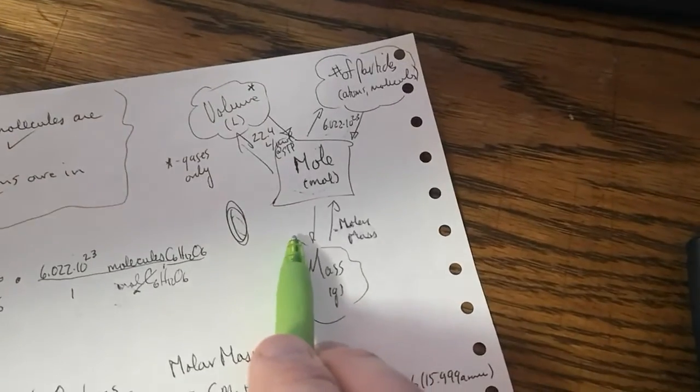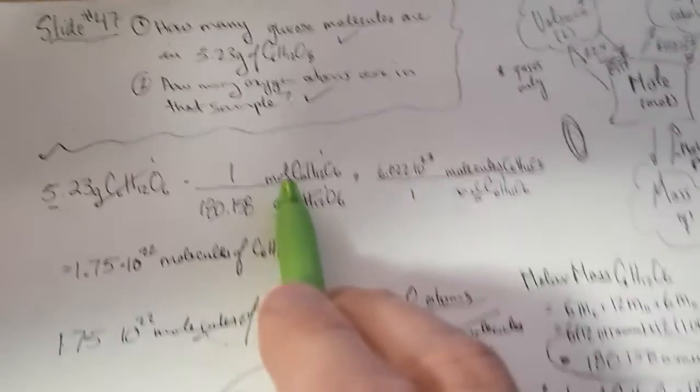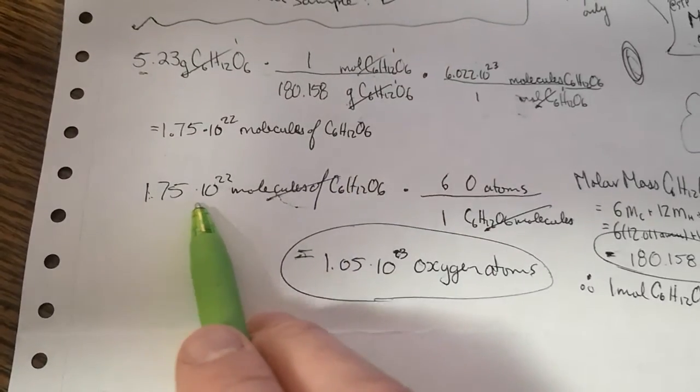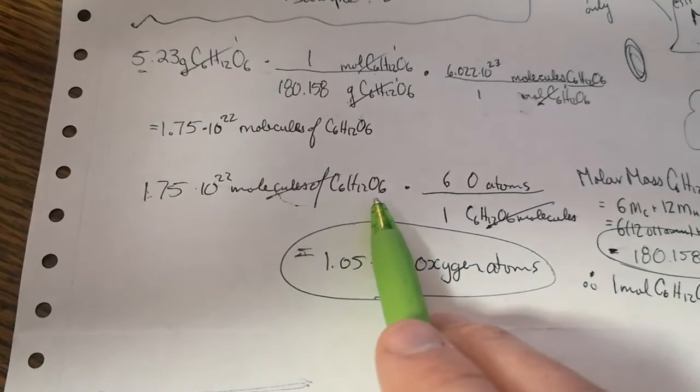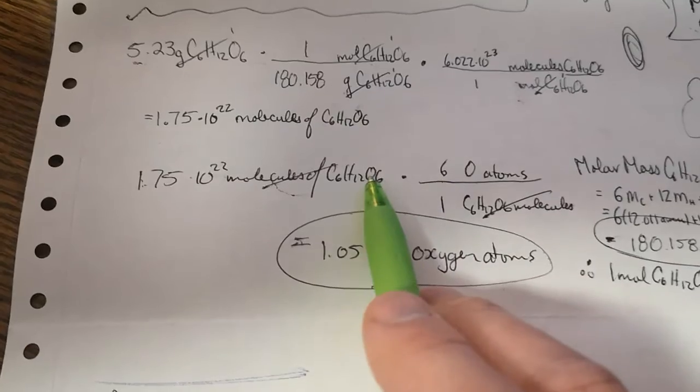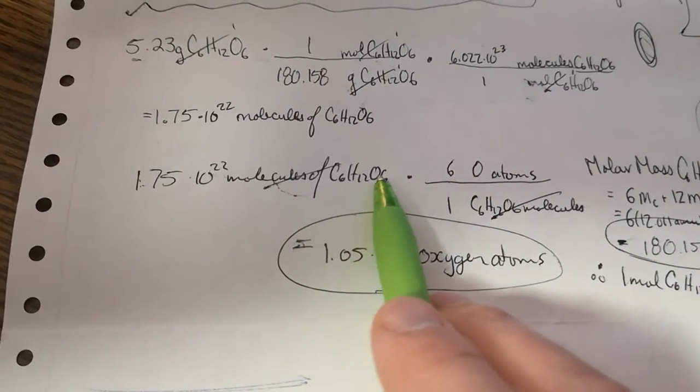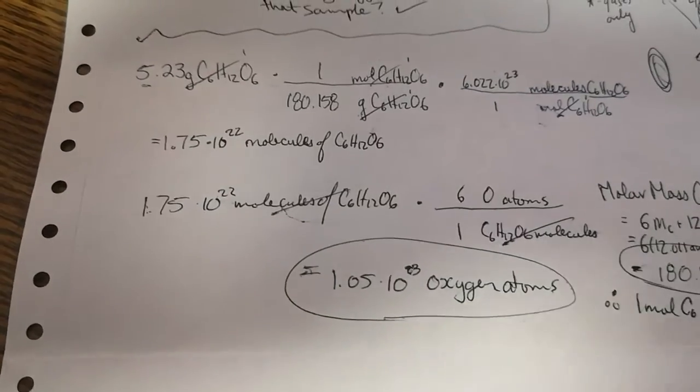This graphic organizer that I quickly sketched up can be helpful. We solved for the molecules of glucose. Now, from the molecules of glucose, we were then able to convert it into oxygen atoms by virtue of being able to read a formula. There's six oxygen atoms in one molecule to come up with our final answer.